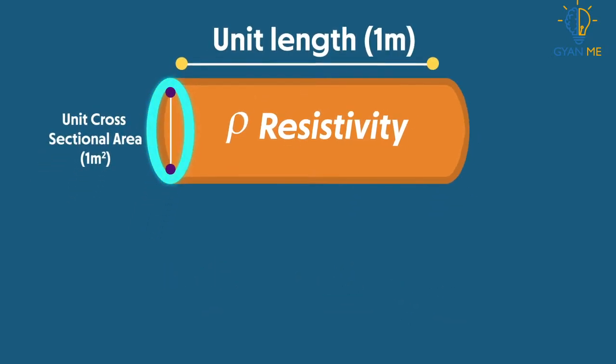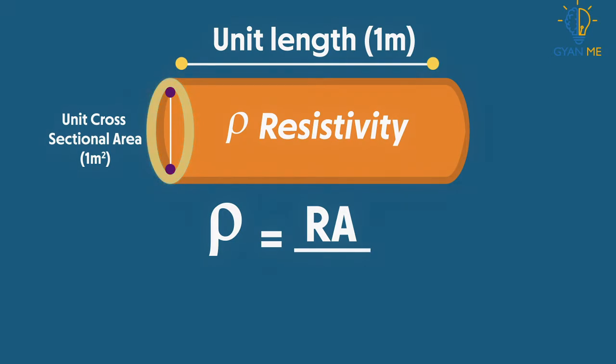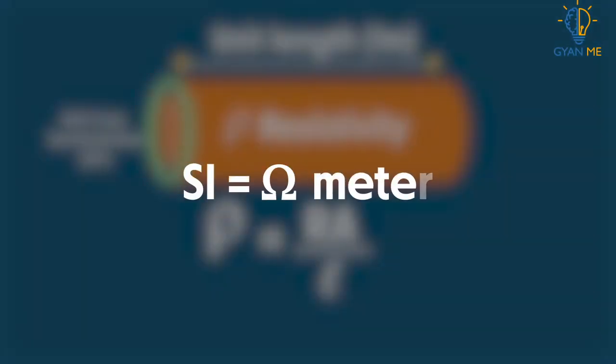Mathematically, we can write it as Rho equals R multiplied by A divided by L. The SI unit of resistivity is the Ohm meter.